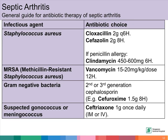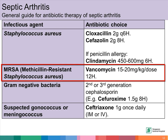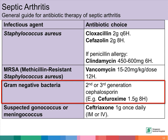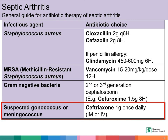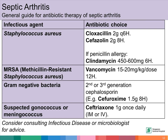This is a table showing a general guide for antibiotic therapy of septic arthritis. Staphylococcus aureus is the most common organism causing septic arthritis. Antibiotic choice for this organism includes cloxacillin, or erythromycin if the patient is allergic to penicillin. Those with MRSA causing septic arthritis should receive vancomycin. Gram-negative bacteria should be treated with a second or third generation cephalosporin. In those with suspected gonococcal or meningococcal septic arthritis, ceftriaxone is given either intramuscularly or intravenously. In all cases, one should always consider consulting the infectious disease consultants or microbiologists for advice.